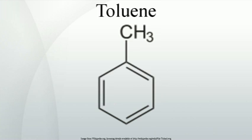Solvent: Toluene is a common solvent, able to dissolve paints, paint thinners, silicone sealants, many chemical reactants, rubber, printing ink, adhesives, glues, lacquers, leather tanners, and disinfectants. It can also be used as a fullerene indicator, and is a raw material for toluene diisocyanate, used in the manufacture of polyurethane foam and TNT.